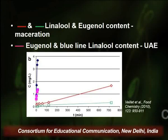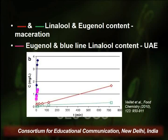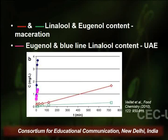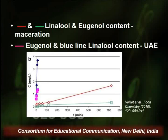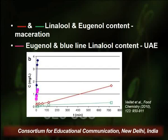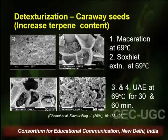The graph shows the effect of maceration versus ultrasound-assisted extraction. The red and green lines show linalool and eugenol content extracted by maceration; the pink and blue lines show content extracted by ultrasound-assisted extraction. Not only was the content significantly increased, but the extraction time required was significantly less than that required for maceration.